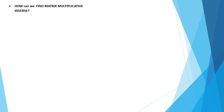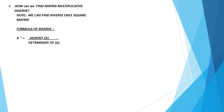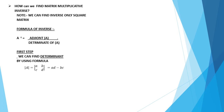How can we find the multiplicative inverse of a matrix? Note that we can find the inverse of only a square matrix. The formula of inverse is: A inverse is equal to adjoint of A divided by determinant of A.